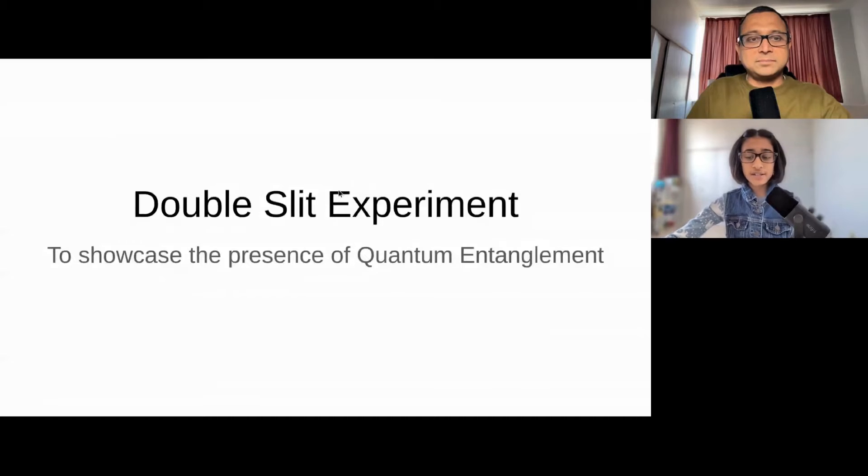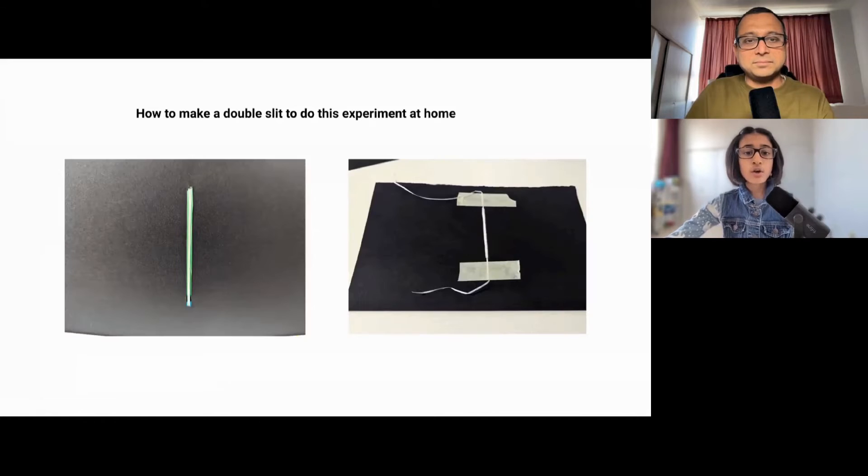Okay, so here it is. So, this experiment will showcase the presence of quantum entanglement. So, this is how to make the experiment at home. So, all you need is one piece of paper, preferably black, so that the reflection of the paper does not fall on the light. So, you just cut the paper in half, and then cut a little slit like this in the middle of the paper, and place a floss in the middle of the slit. So, now we have these two slits on either side, this and this. And you can just stick the floss on the back of it with tape.